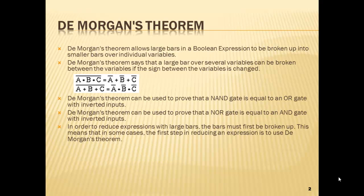Basically what happens with De Morgan is when you break a line you change a sign. In our examples here we've got A, B, and C with a line over the whole thing. If I break this line right where my arrow is, it's an AND underneath that line. Break the line and the AND becomes an OR, and then the line is just over A. Break again and that AND becomes an OR, and we have the line over B and then over C. So: break the line, change a sign.